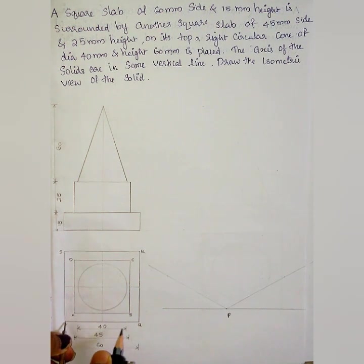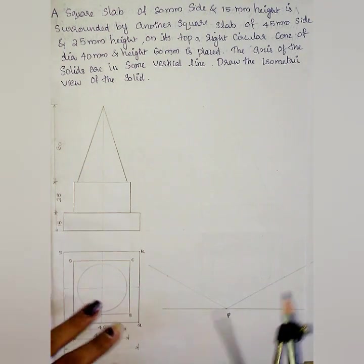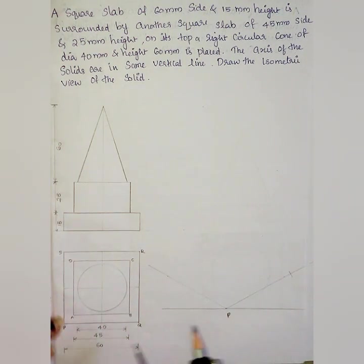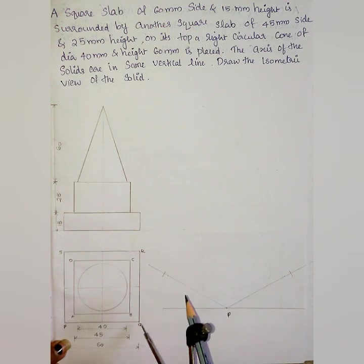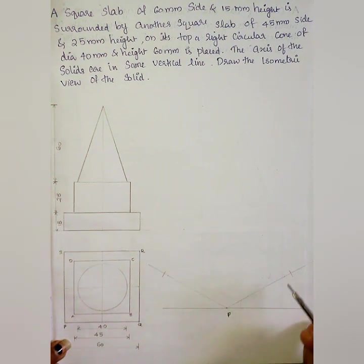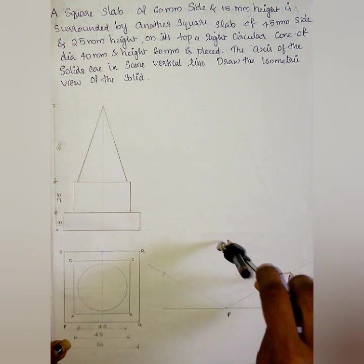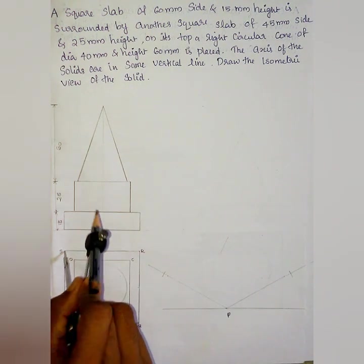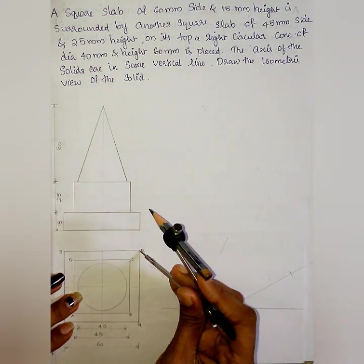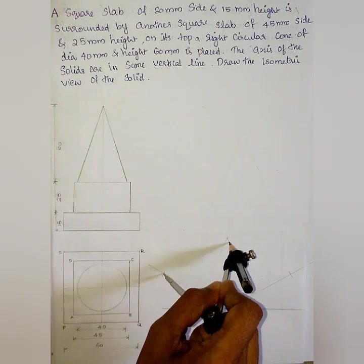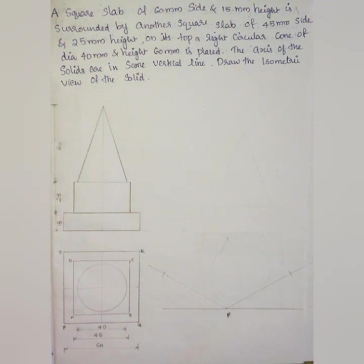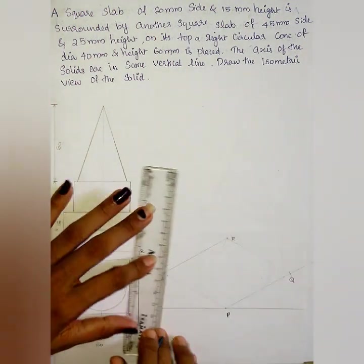We mark the base as PQRS in isometric view. P to Q distance gives us Q, P to S distance gives us S, Q to R distance gives us R. PQRS are the four base points. The first square slab thickness is 15mm, so from each point we draw a vertical line of 15mm height.